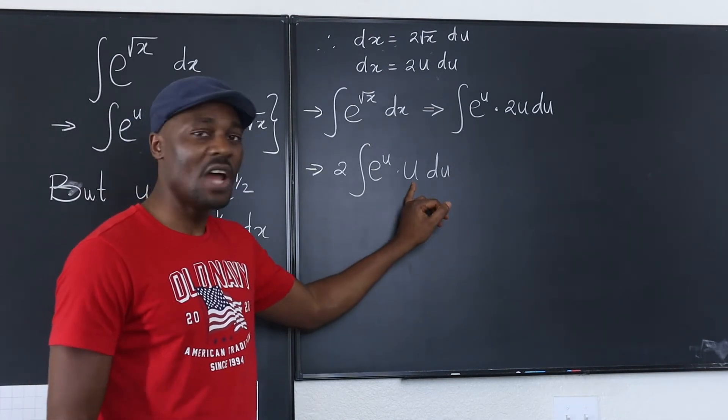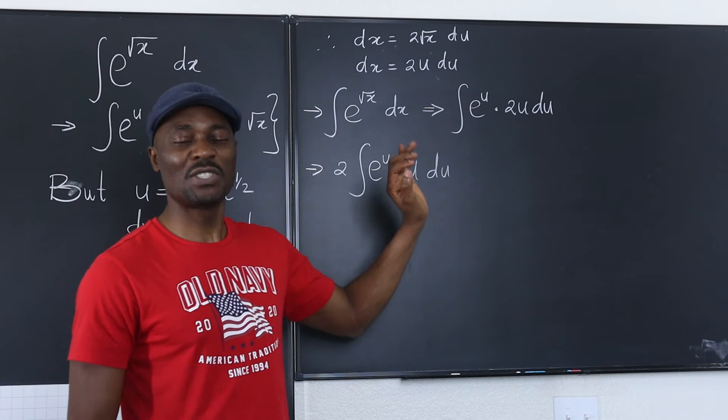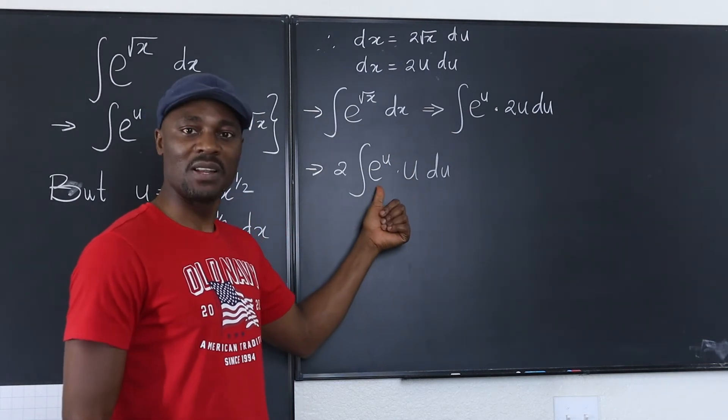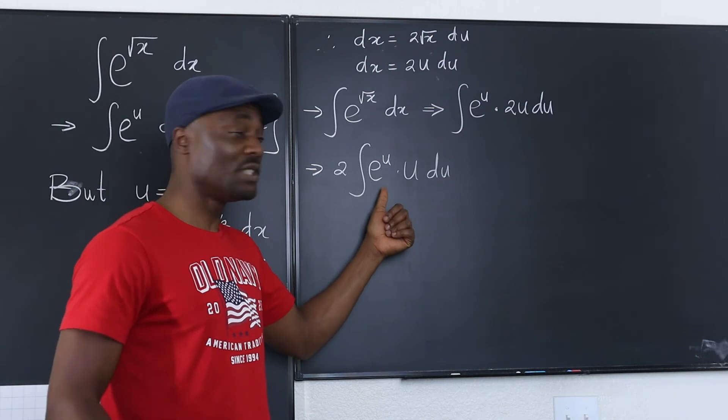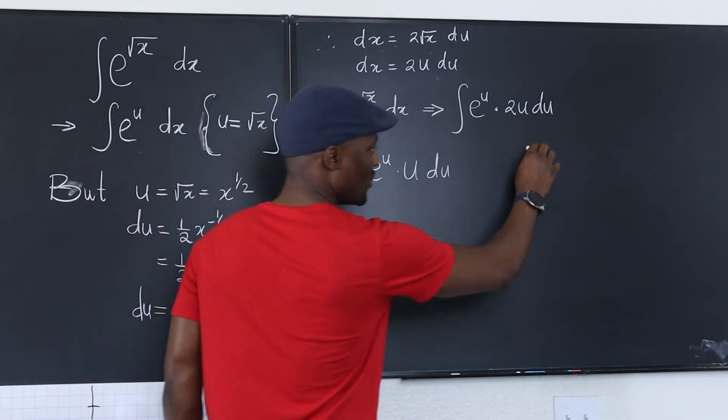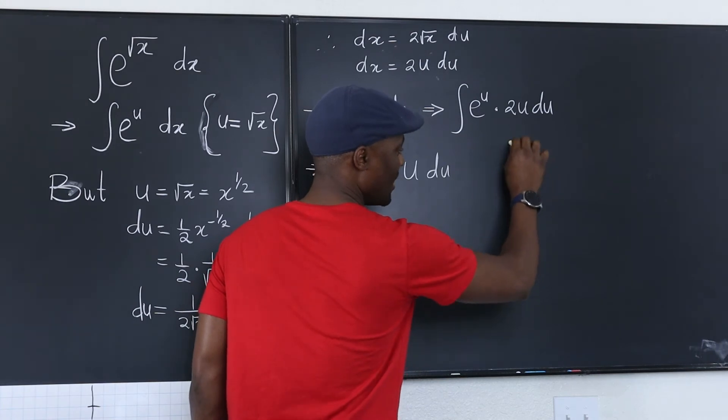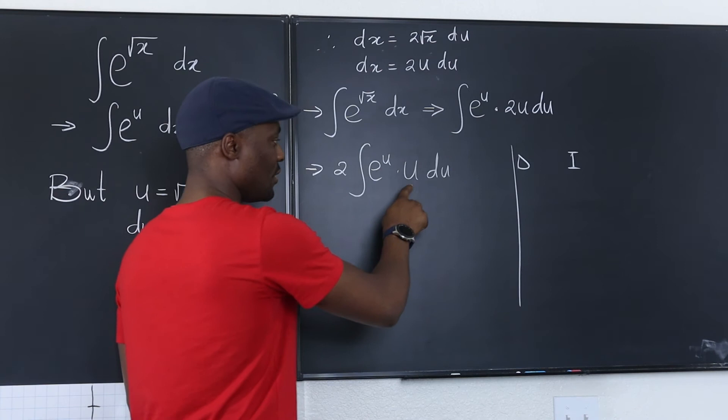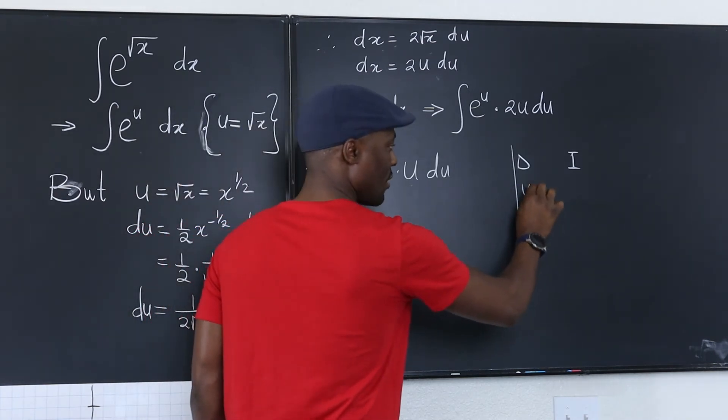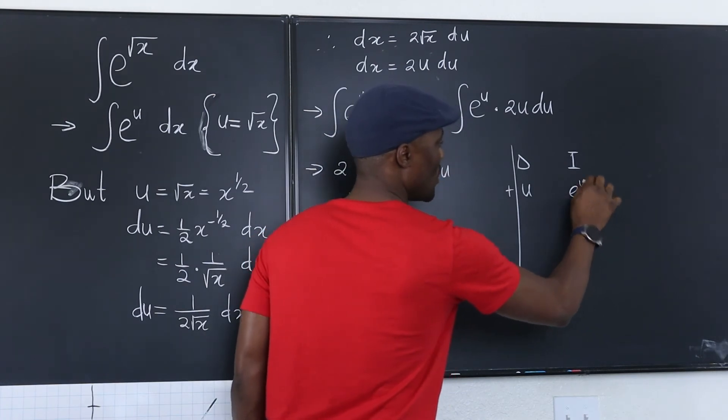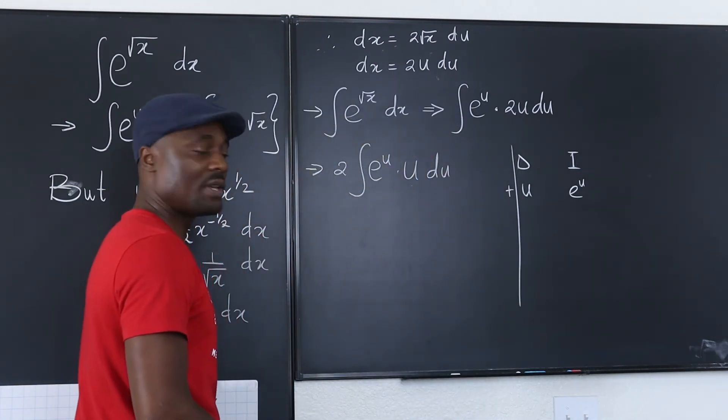Now, if it was not a polynomial function, you might want to switch that role and make this one the u, the one you will differentiate. Let's just do the DI method quickly here. So let's say you differentiate this and you integrate this. I'll write e to the u as what I am going to integrate.